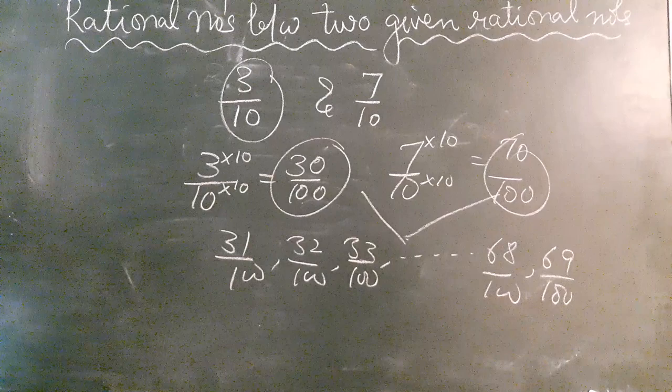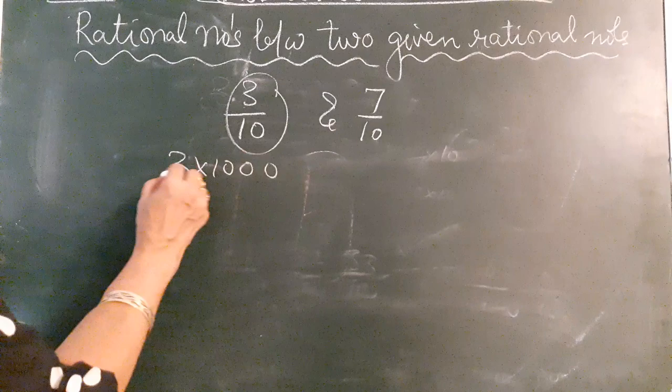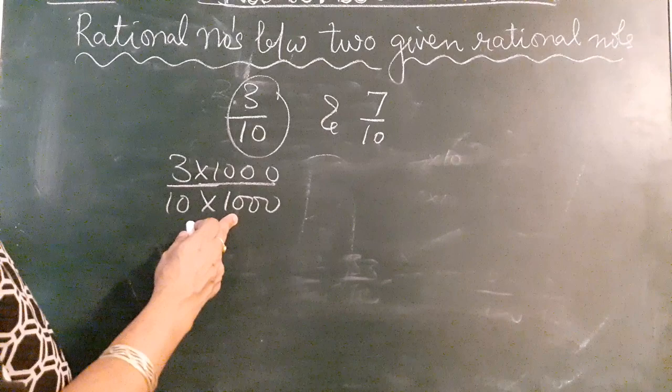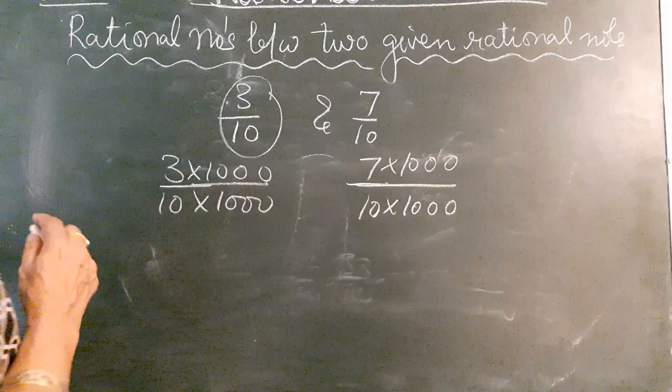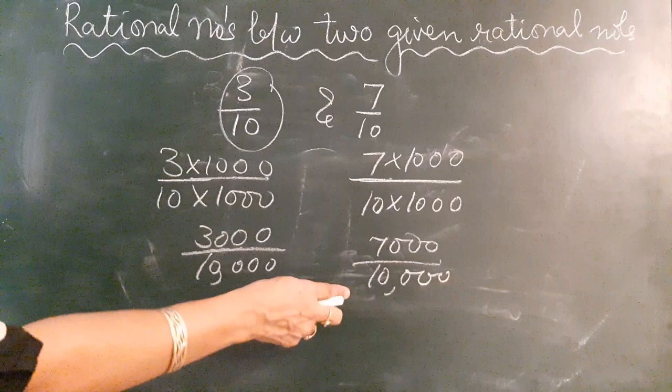Now, you can also write 3/10 by multiplying 3 and 10 both by 1000. Since we are multiplying numerator and denominator by the same number, we get an equivalent fraction. So 3/10 becomes 3000/10000 and 7/10 becomes 7000/10000. Now the numbers in between will increase.